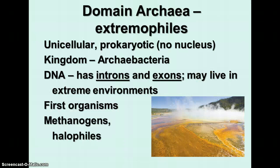A little bit about each domain. The domain Archaea are called extremophiles. These are unicellular prokaryotic cells — they have no nucleus. There is one kingdom belonging to domain Archaea: kingdom Archaebacteria. The DNA of these bacteria has both introns and exons, meaning not every piece of DNA is fully transcribed and translated into a protein — parts are edited out. The introns are the parts edited out, and the exons are spliced together to make the part that is transcribed.